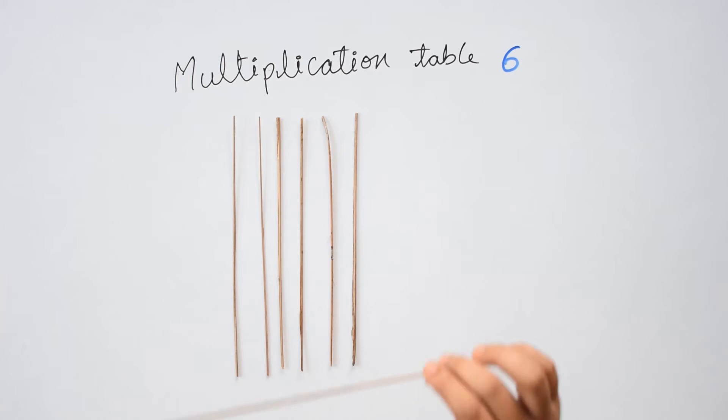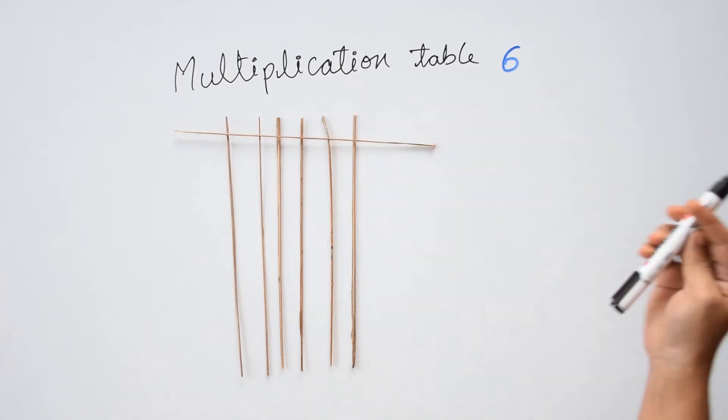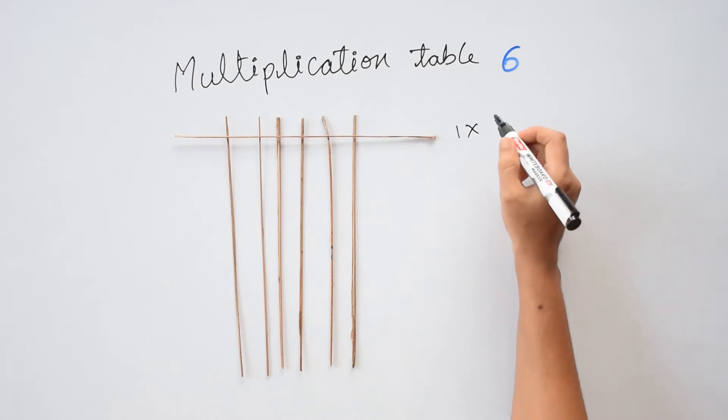Now I am going to take one more stick and then keep it in the sleeping position like this. Now I have one stick in the sleeping position. So I am going to write 1 times 6 sticks in the standing position, 6 equals to.